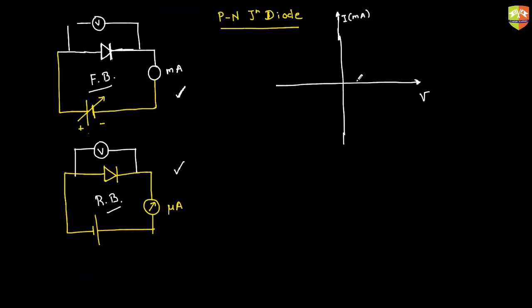If you apply a voltage less than 0.6–0.7 volts, the diode will not get activated and the current will be close to zero. But if you apply say 1 volt or 3 volts, electrons will gain sufficient kinetic energy to overcome the barrier and a good amount of current will flow. The diode then behaves like a conductor. The characteristic curve goes like this — it starts rising around 0.8 volts, which is the knee voltage.